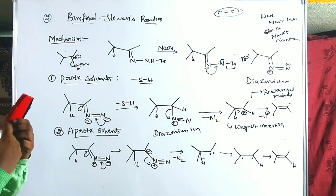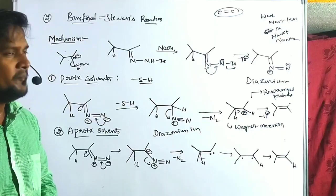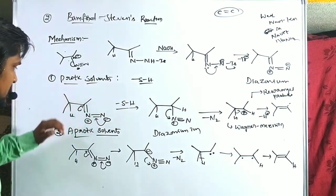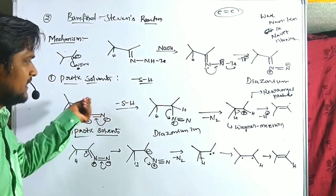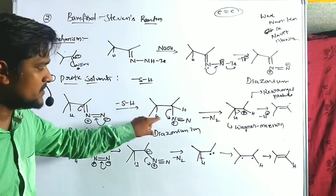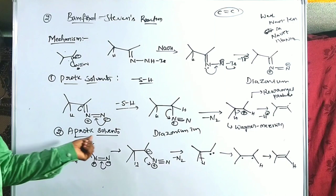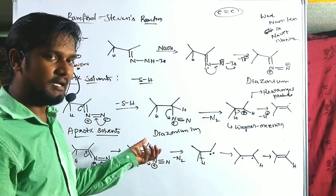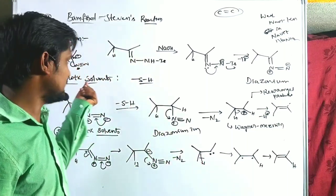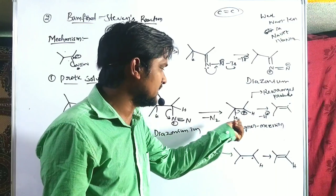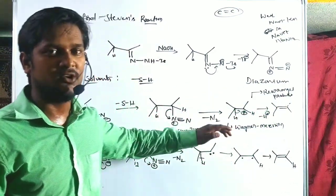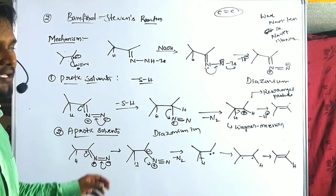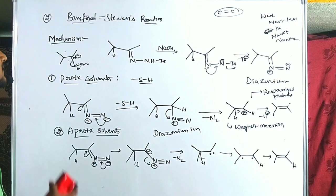This is the mechanism for both protic and aprotic solvents. The major difference is: in protic solvents, a diazonium ion forms leading to a carbocation, which gives Wagner-Meerwein rearranged products as the major product. In aprotic solvents, no diazonium ion forms; instead a carbene intermediate is produced, giving cleaner olefin products. The Bamford-Stevens reaction was synthesized in 1935 by Bamford and Stevens.